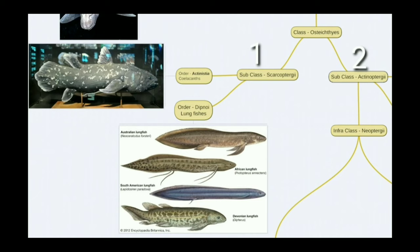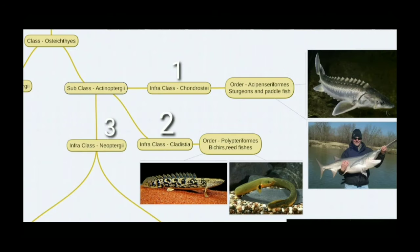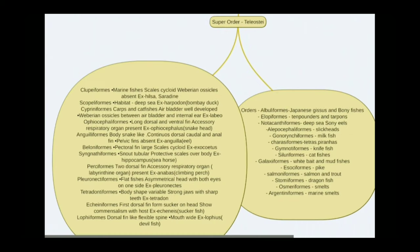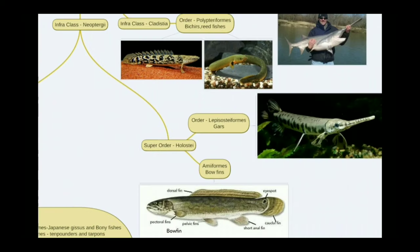Subclass Actinopterygii has three infraclasses: infraclass Chondrostei, infraclass Cladistia, and infraclass Neopterygii. Infraclass Chondrostei has one order, Acipenseriformes, which includes sturgeons and paddlefishes. Infraclass Cladistia has one order, Polypteriformes, with examples being bichirs and reedfish.